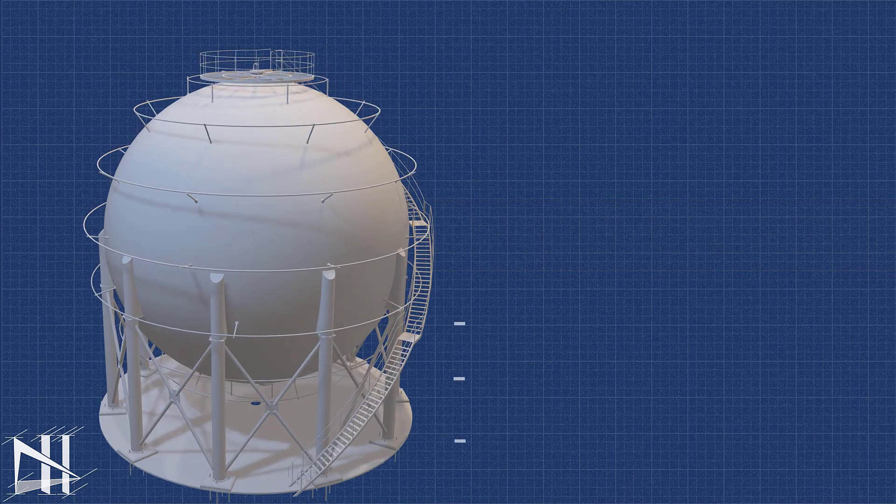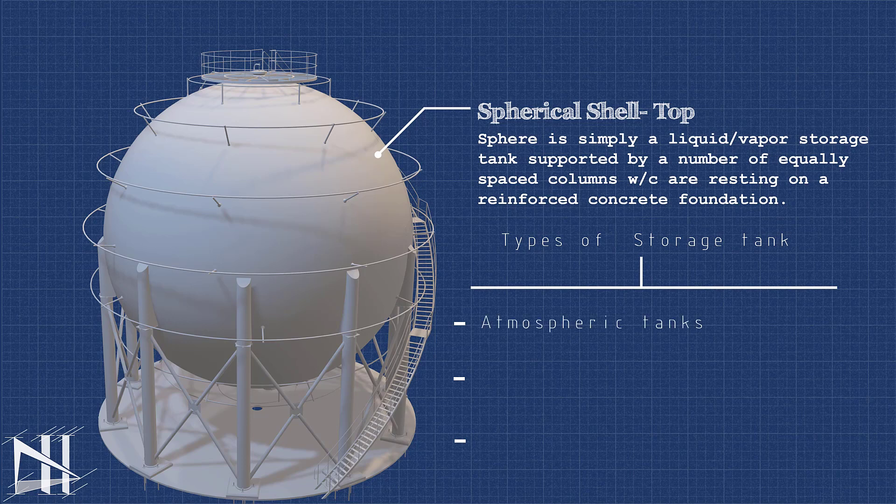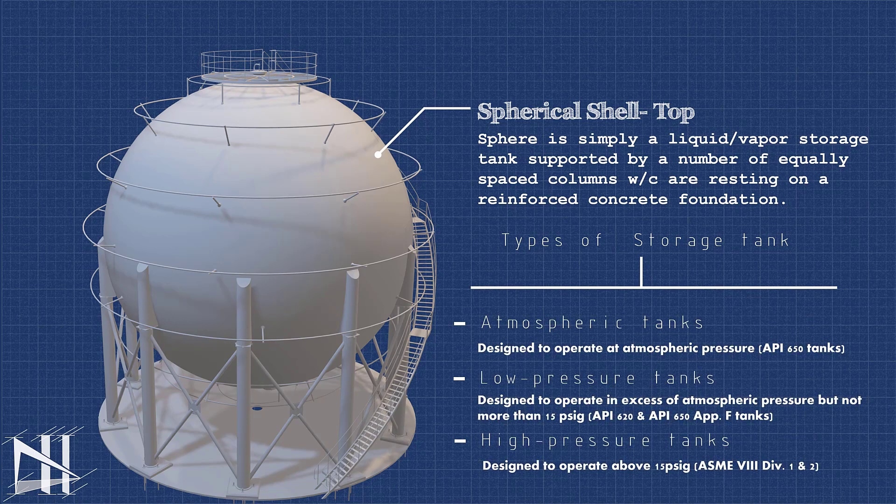Spherical Storage Tanks are a type of tank that is used to store liquids and gases. They are shaped like a sphere, which is the most efficient shape for storing these materials. The spherical shape allows the tank to withstand high pressures and loads.